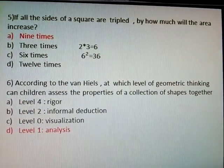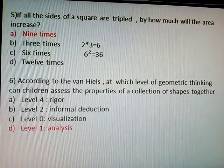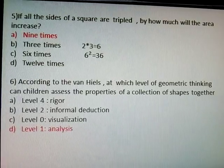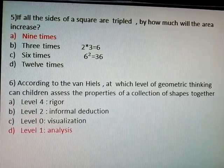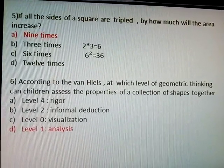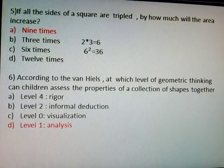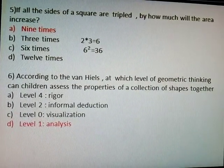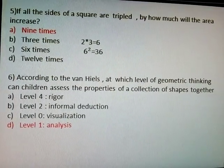If all the sides of a square are tripled, how much will the area increase? Answer: 9 times. Example: 2×2=4, 3×6=6... 6×6=36.